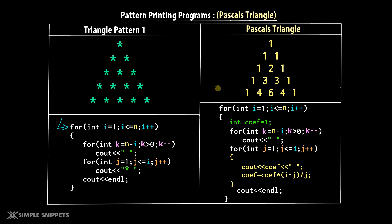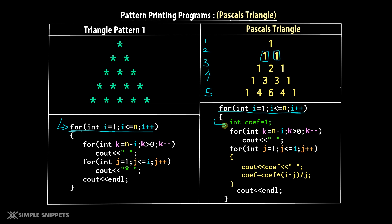Quickly comparing the two patterns: the outer for loop is exactly the same — starting with int i = 1, i <= n, i++. Here n is the number of rows; we have 5 rows so n = 5. The outer for loop runs equal to the number of rows to be printed. Inside, the key difference is we create an integer variable 'coefficient', initialized to 1 with every outer loop iteration, because the triangle starts with 1 every time.